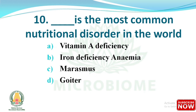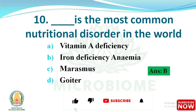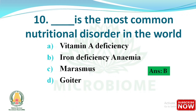Question: Which is the most common nutritional disorder in the world? Options: vitamin A deficiency, iron deficiency anemia, marasmus, and goiter. The right answer is option B - iron deficiency anemia. In iron deficiency anemia, the blood has a lower RBC count. In children less than 3 years old, they may eat mud. The symptom koilonychia refers to spoon-shaped nails.